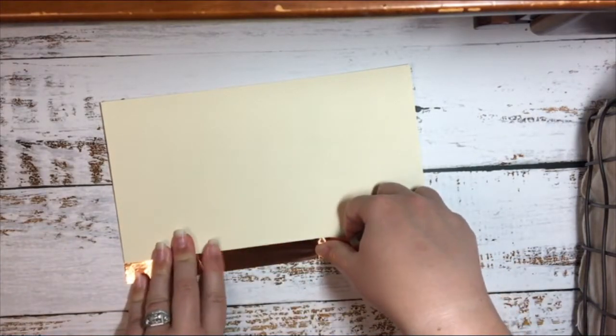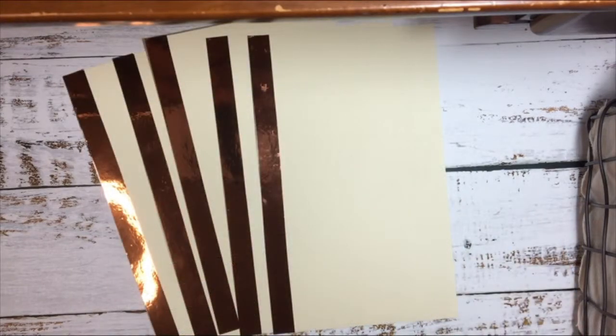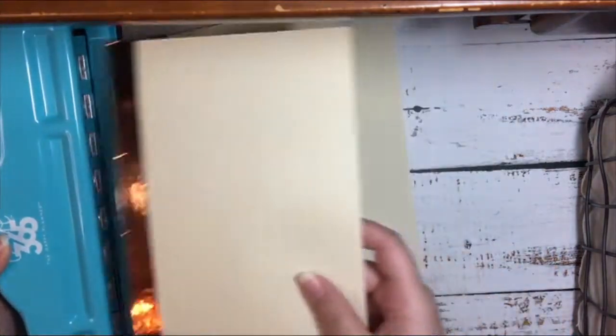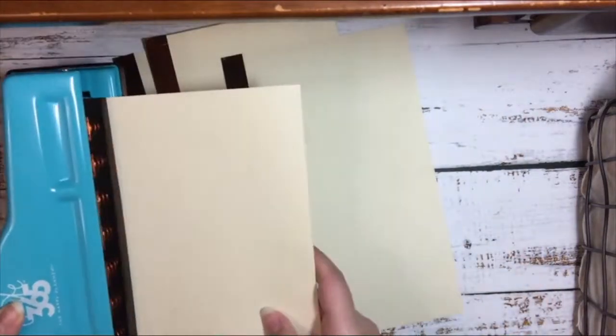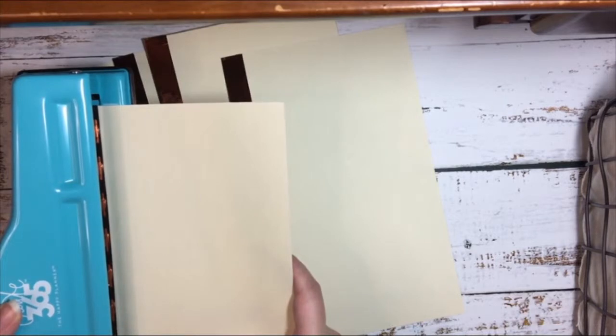I'm going to do this to all of my pages. I've got five of them, so I'm going to finish covering those and then I will get back with you. Now that I have all of my pages covered, I'm going to take my happy planner punch and stick these in. I'm going to put these in one at a time and line them up with the edge.